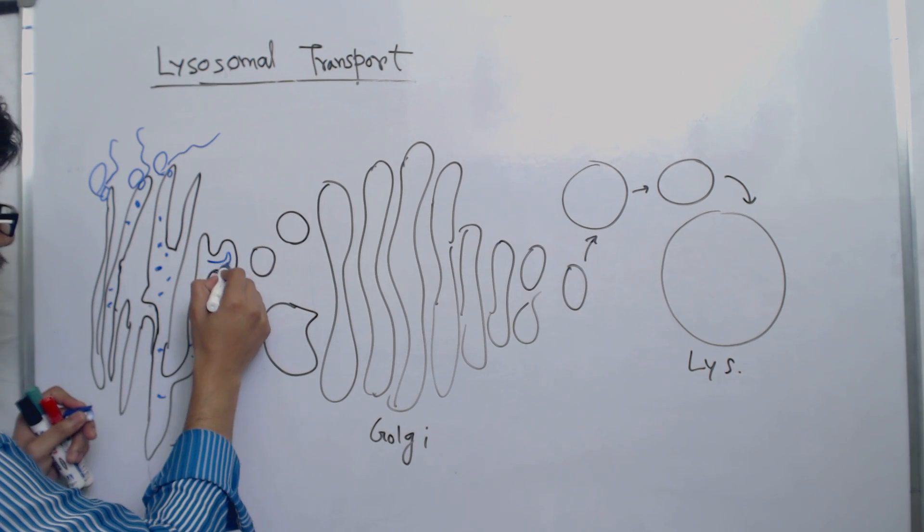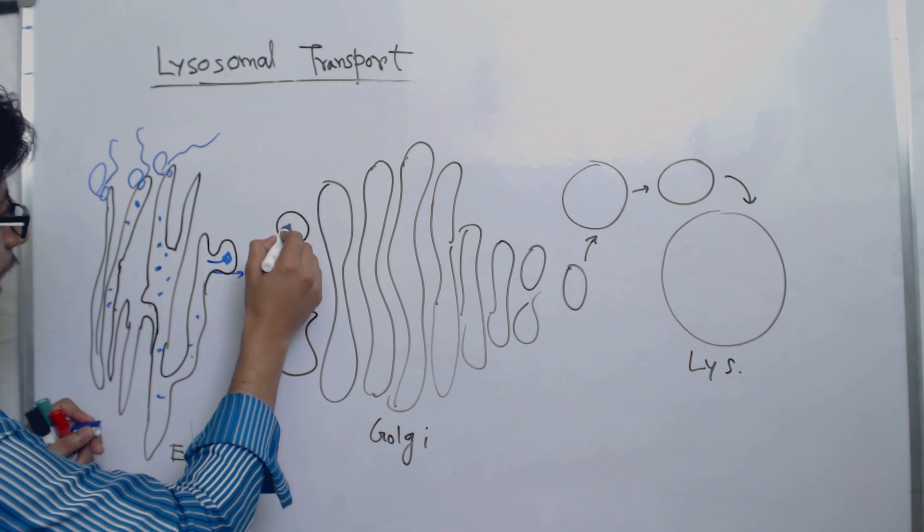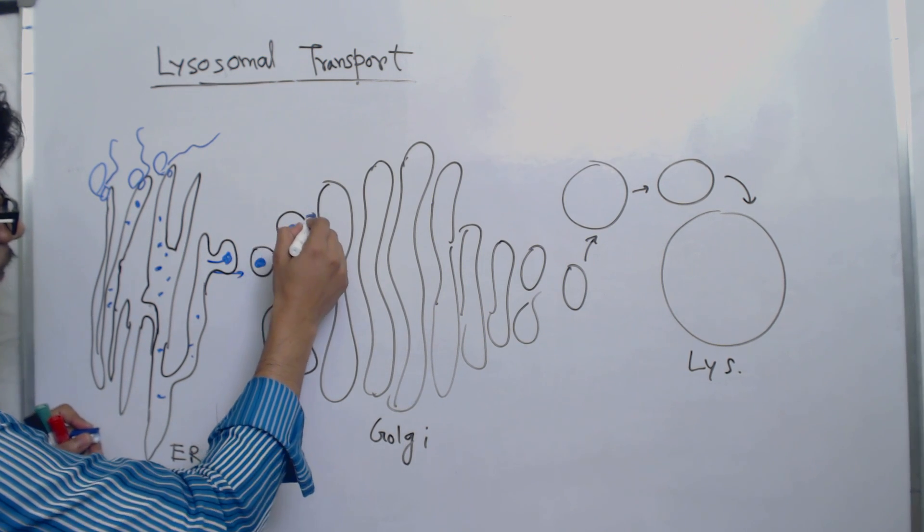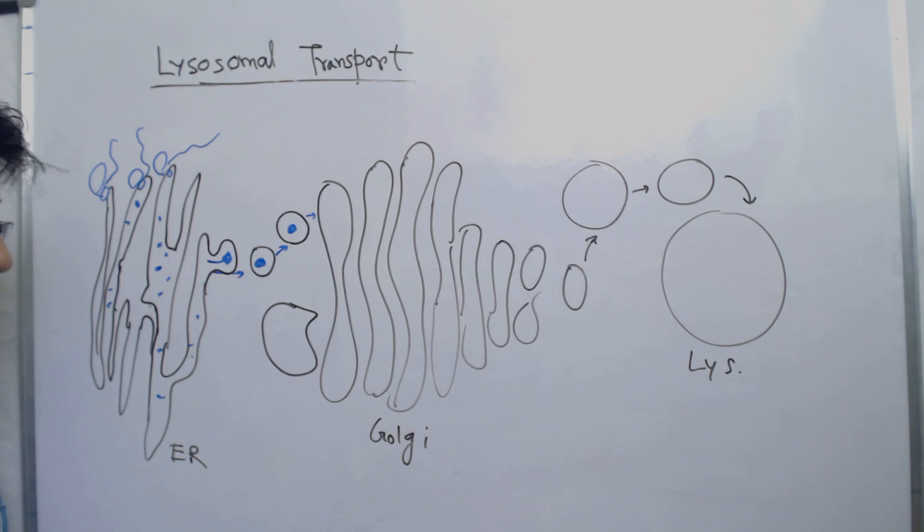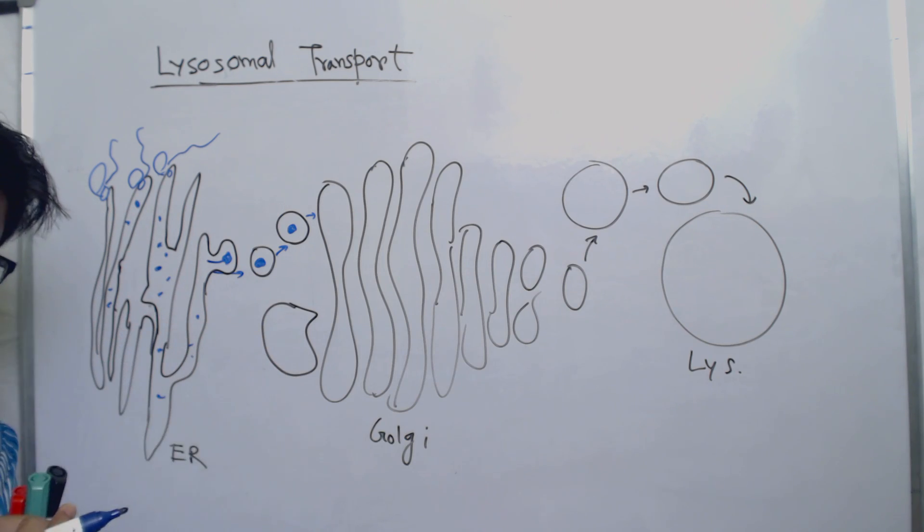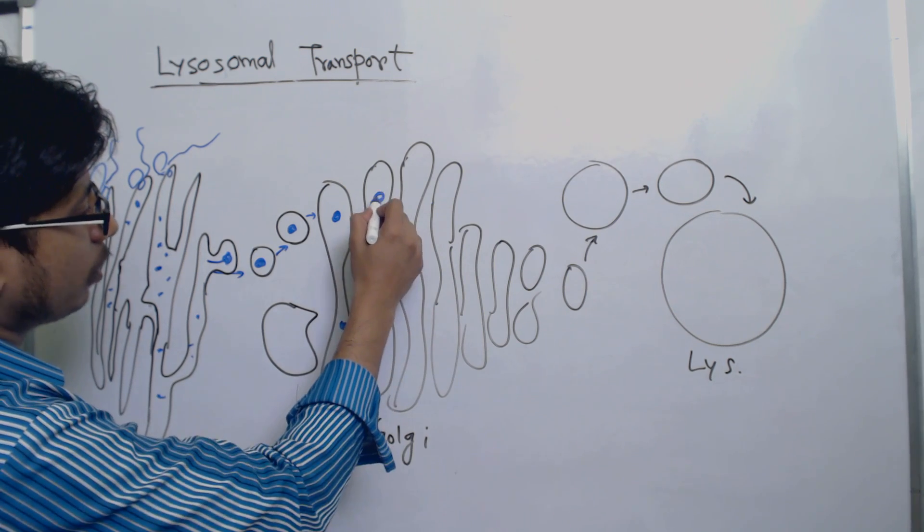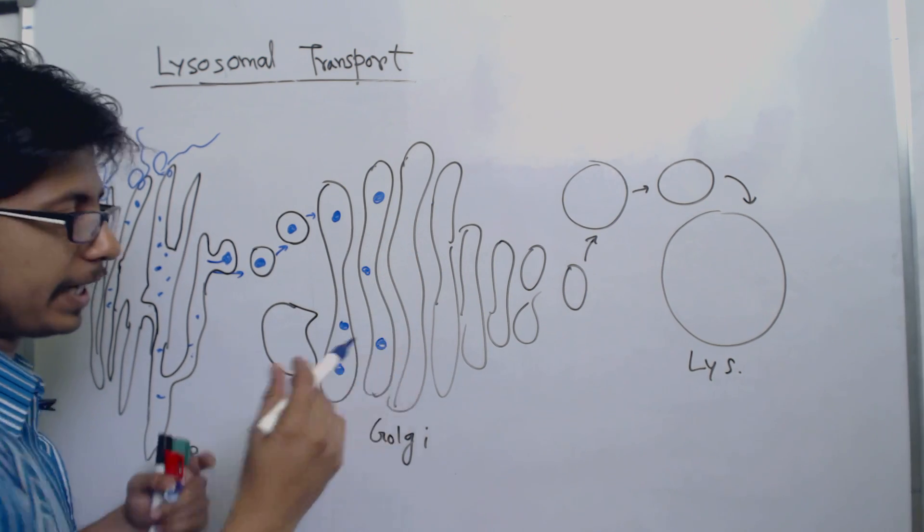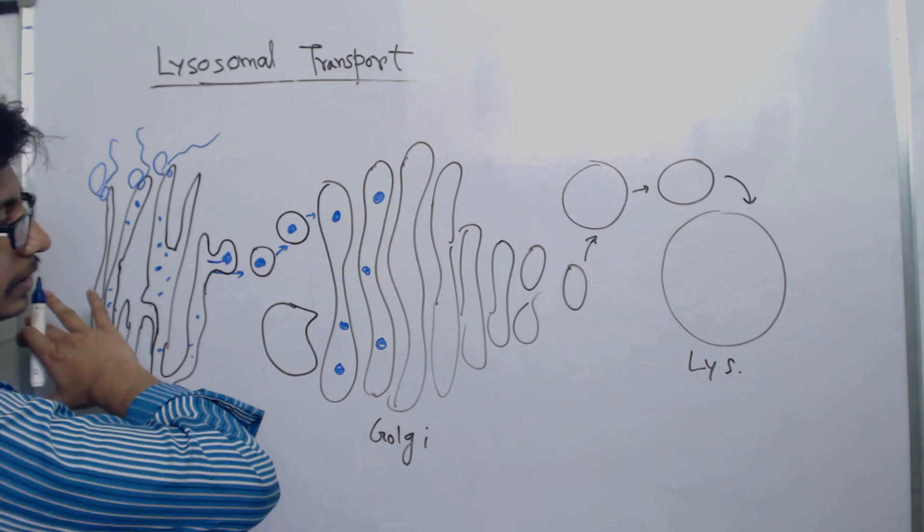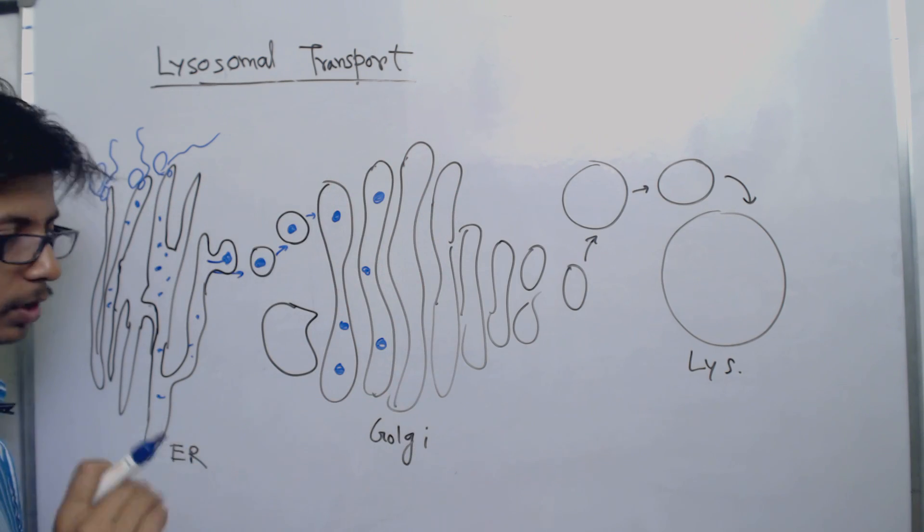Here will be these proteins moving inside the vesicle. That protein will now go and fuse with the Golgi apparatus. Actually those vesicles will fuse with themselves. As a result, Golgi is formed with the help of the interaction of those vesicles, and the target protein is transferred to the Golgi apparatus.